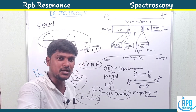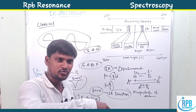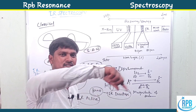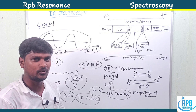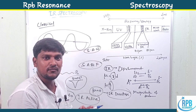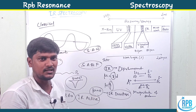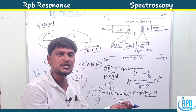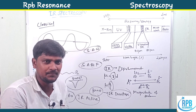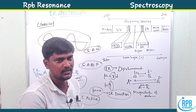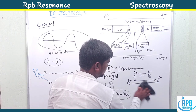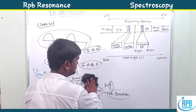In rotational spectroscopy, the direction of the magnitude changes — negative becomes positive, positive becomes negative. But in vibrational spectroscopy, the direction cannot change; only the magnitude changes. So in rotational spectroscopy the direction changes while the magnitude does not, and in vibrational spectroscopy the magnitude changes while the direction does not. This is the major difference between rotational and vibrational spectroscopy.